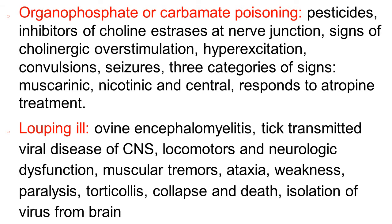Organophosphate or carbamate poisoning also produces similar symptoms. These are pesticides that inhibit cholinesterase at the nerve junction and cause convulsions. There are signs of cholinergic overstimulation: hyperexcitation, convulsions, and seizures. There are typical categories of signs — first muscarinic signs, then nicotinic, then central signs. The animal responds well to atropine treatment.